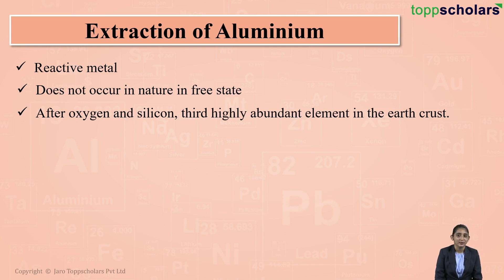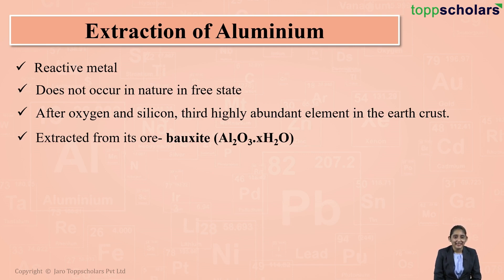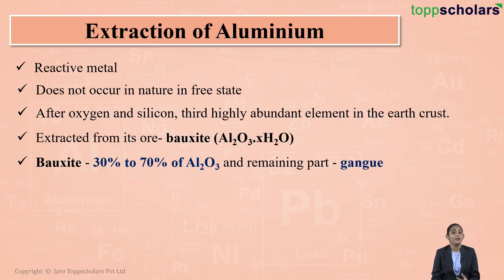After oxygen and silicon, aluminium is the third most abundant element found in the earth's crust. In the earth's crust, aluminium is found in the form of bauxite, which is aluminium oxide (Al₂O₃·xH₂O), where x stands for the number of water molecules. Bauxite is the ore of aluminium and contains about 30 to 70 percent aluminium oxide, with the remaining part made up of impurities called gangue.